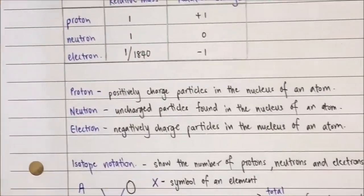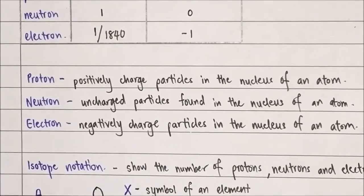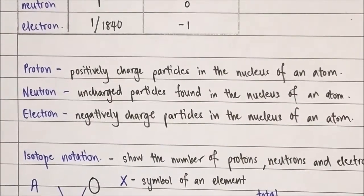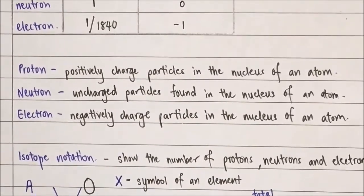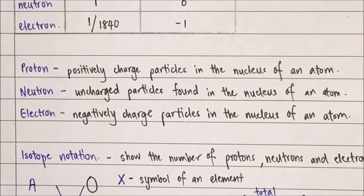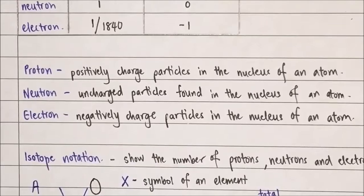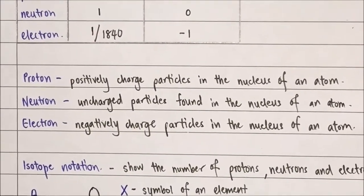Now we will move on to the definition for Proton, Neutron, and Electron. Proton is a positively charged particle in the nucleus of an atom. Neutron is an uncharged particle found in the nucleus of an atom. Electron is a negatively charged particle in the nucleus of an atom.